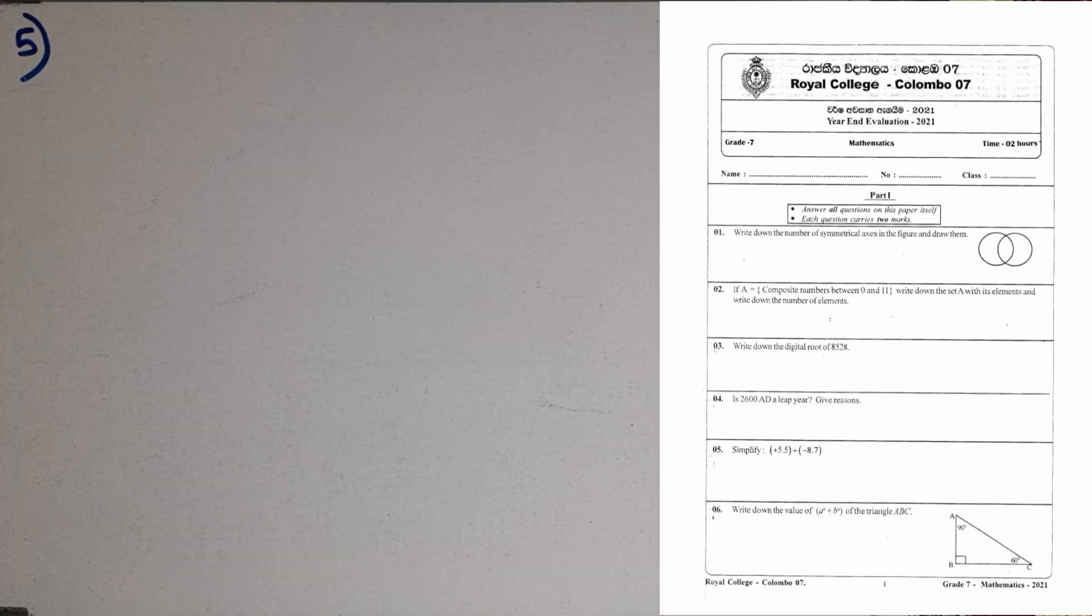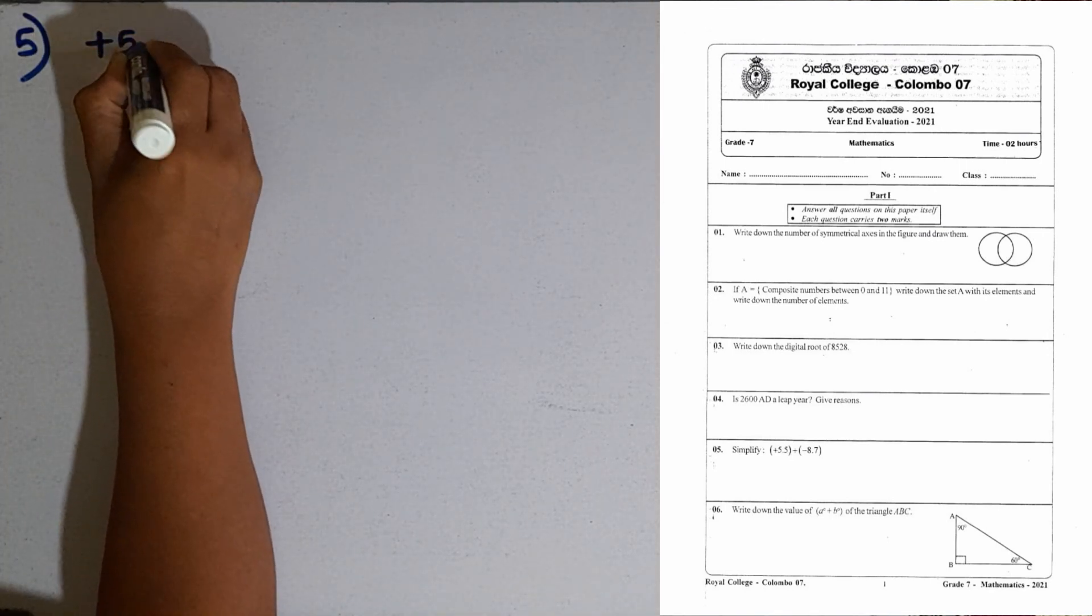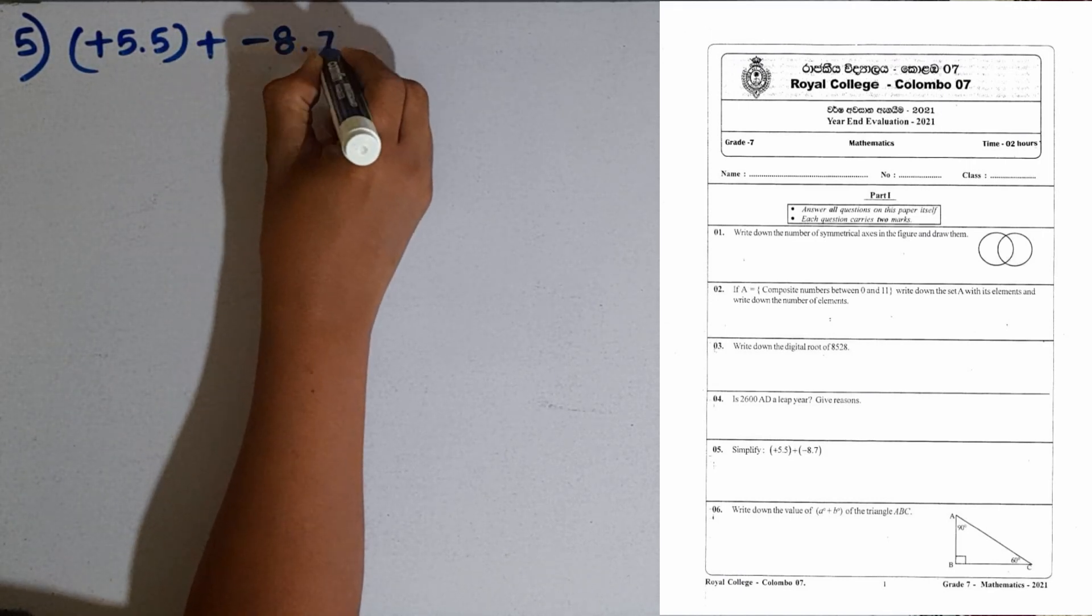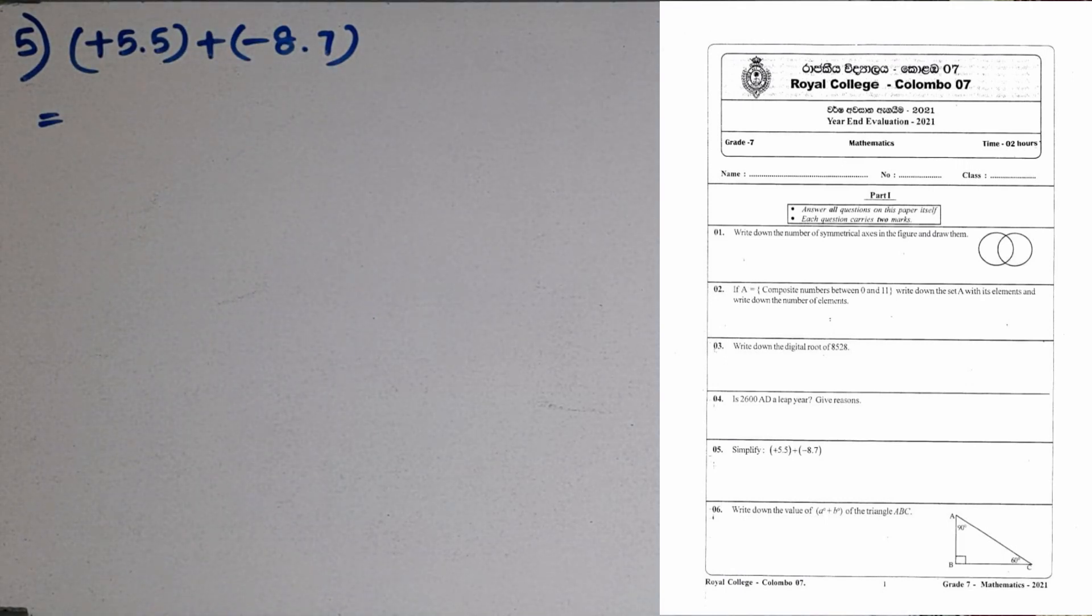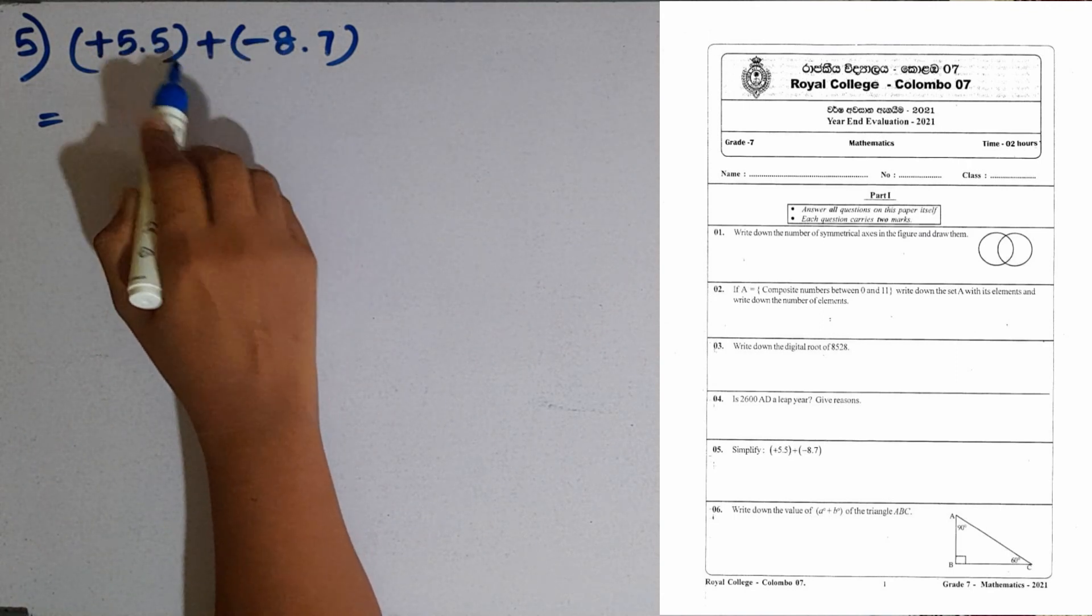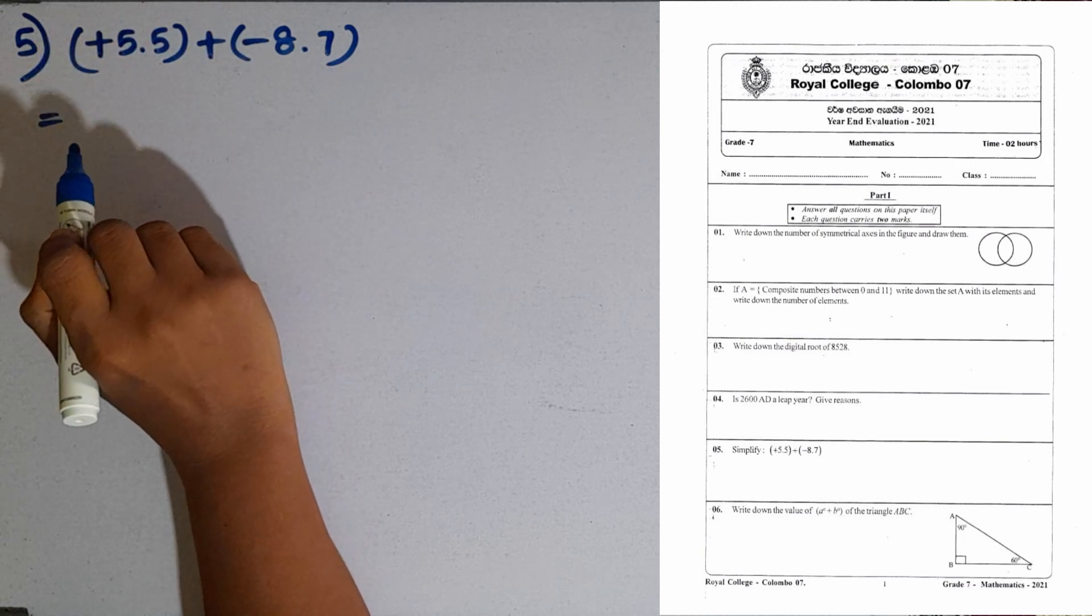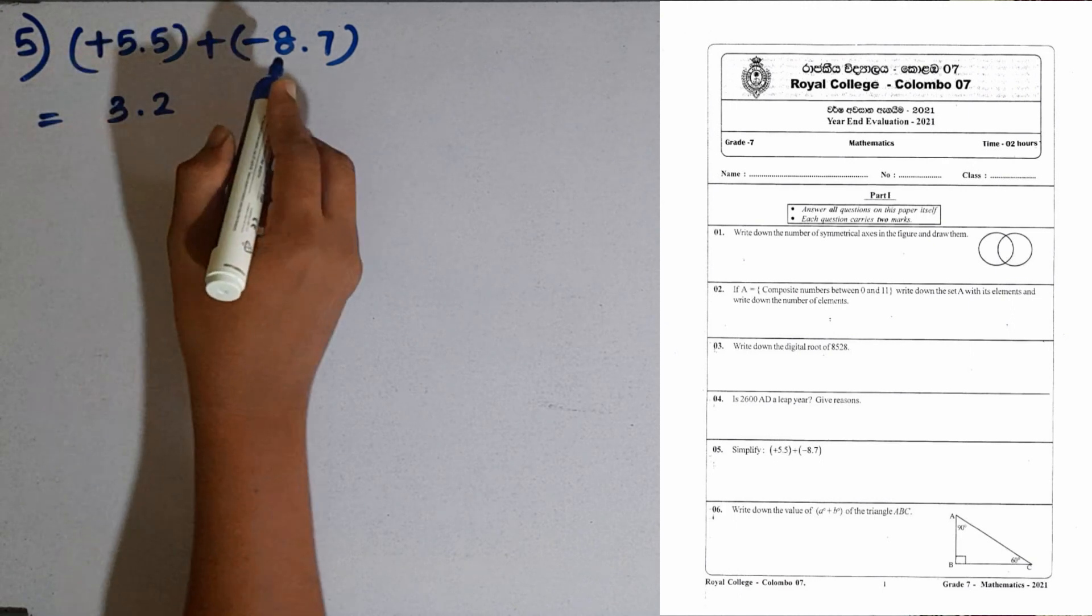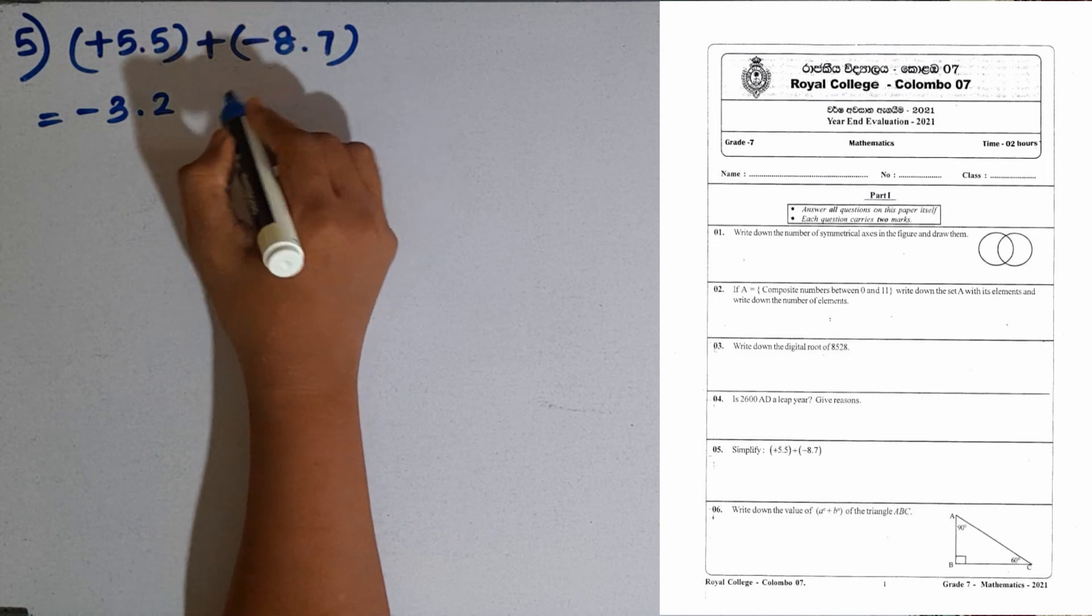Question number 5. We are given to simplify this one. Plus 5.5 plus minus 8.7. A positive number and a negative number. So, first we have to take the difference between the two magnitudes. 8.7 minus 5.5. The answer is 3.2. Then we have to take the sign with the largest magnitude. That is minus sign.